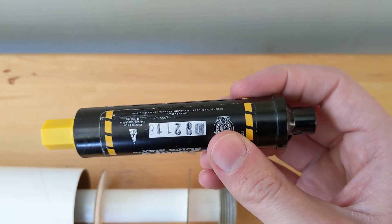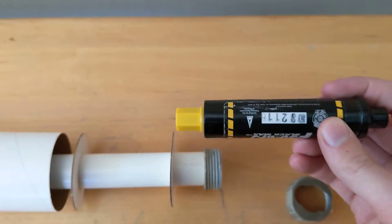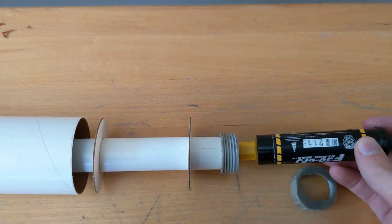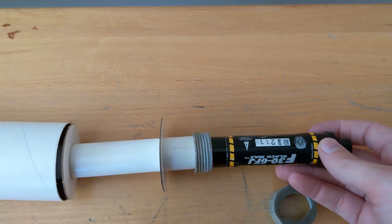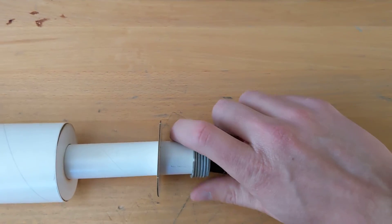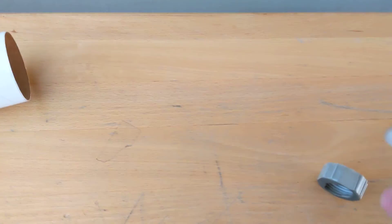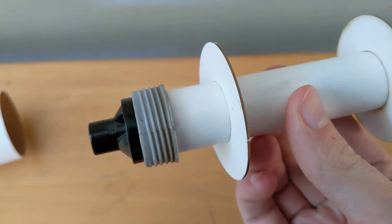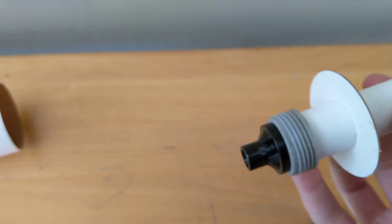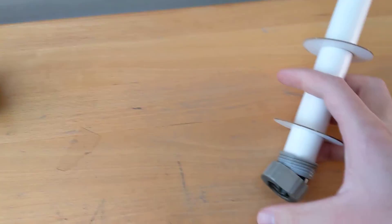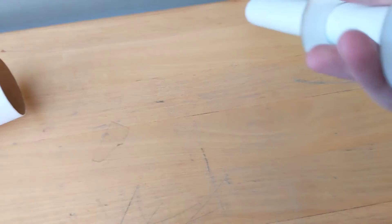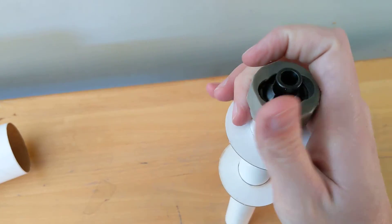So the motor goes into your motor tube, like this, and I've only got one hand. So it slides in just like that, and we have our motor retainer. The motor retainer then is put on like this. Screw that on.